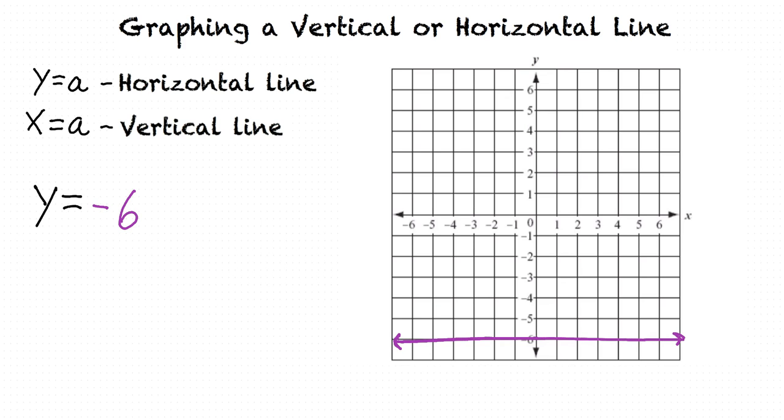And what would the graph of x equals 2 look like? It would be a vertical line passing through the x axis at 2. Great.